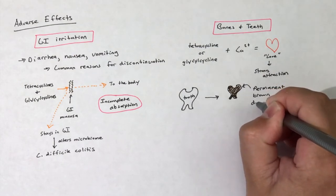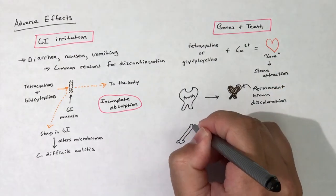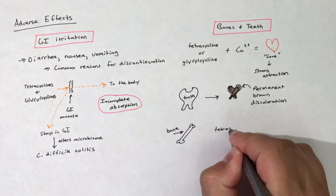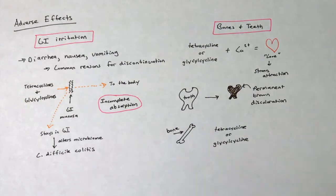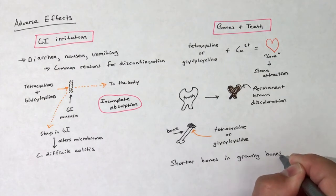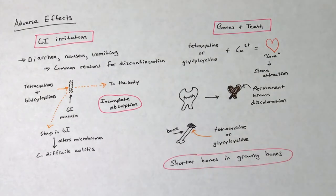Furthermore, tetracyclines and glycylcyclines are avoided in pregnant women due to the effects the drugs can have on the newly formed fetal bones and teeth. Deformity or growth inhibition can occur in fetal bone growth, and discoloration and enamel dysplasia can occur with the fetal teeth.